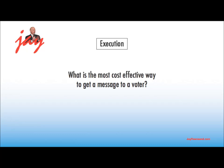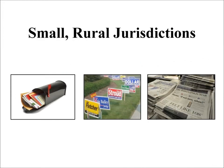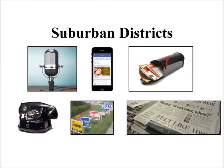There is no standard answer to that question, for no two jurisdictions are the same. In a statewide race, cable and commercial television is usually imperative. Mail and internet ads are used for niche markets. In small jurisdictions, sometimes mail, yard signs, and newspaper ads are the answer. In suburban districts, it is often an adroit mix of radio, internet ads, persuasion mail, telephone calls, and ads in weekly newspapers.